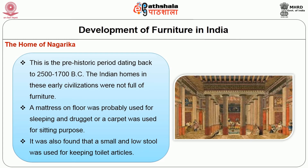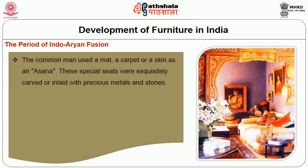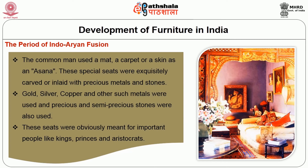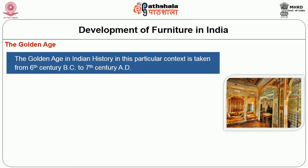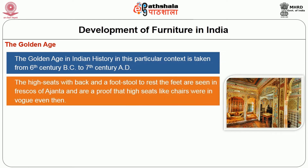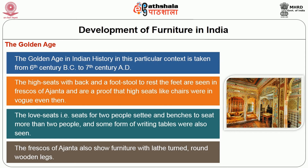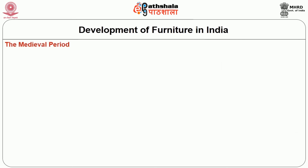The period of Indo-Aryan fusion: the common man used a mat, a carpet, or a skin as an asana. Special seats were exquisitely carved or inlaid with precious metals and stones — gold, silver, copper, and other such metals were used, and precious and semi-precious stones were also used. These seats were obviously meant for important people like kings, princes, and aristocrats. The golden age in Indian history, in this context, is taken from the 6th century BC to the 7th century AD. High seats with a back and a footstool are seen in frescoes of Ajanta, proving that high seats like chairs were in vogue even then. Love seats and some form of writing tables were also seen. The frescoes of Ajanta also show furniture with lathe-turned round wooden legs.